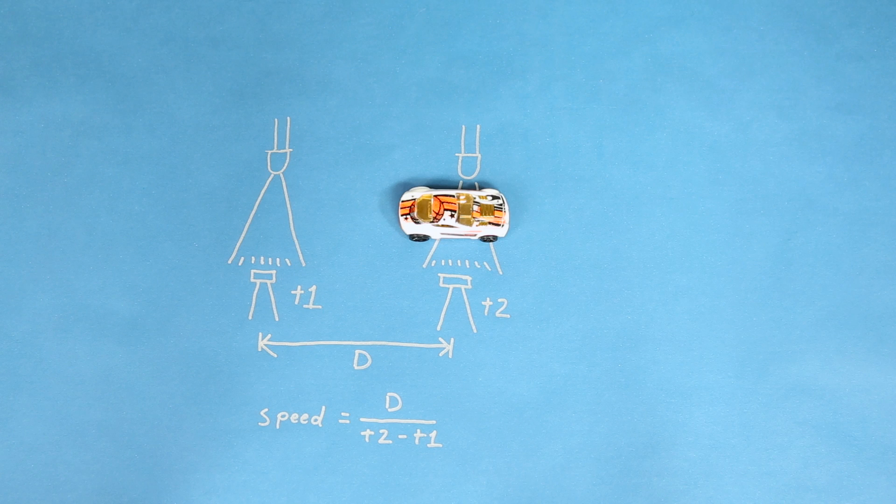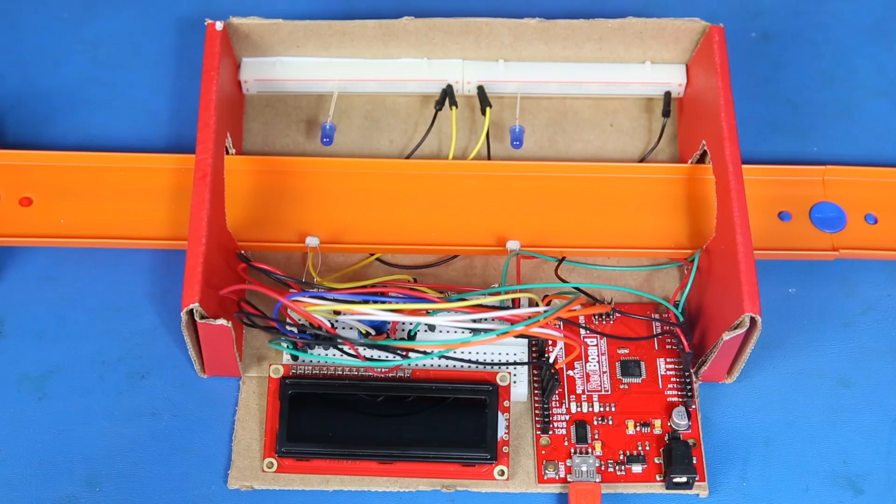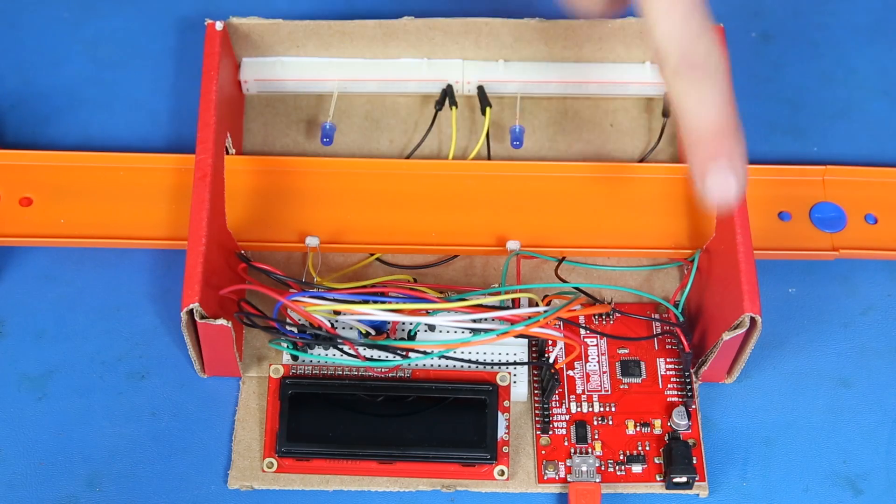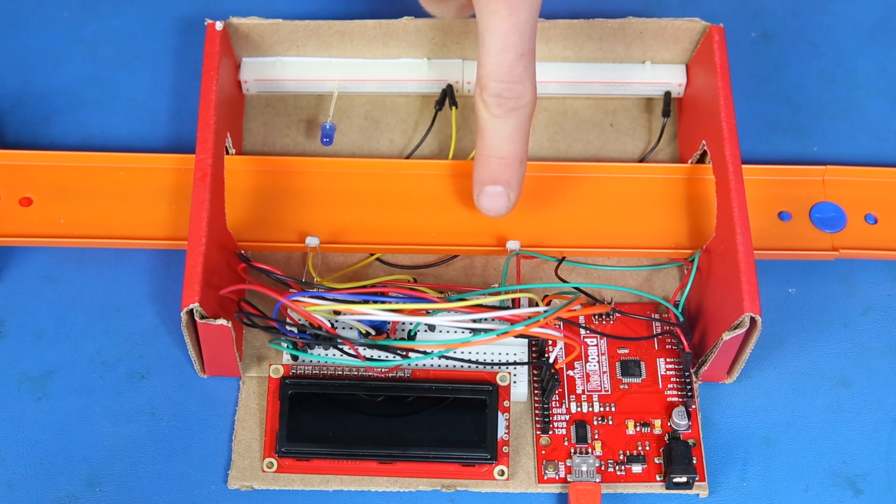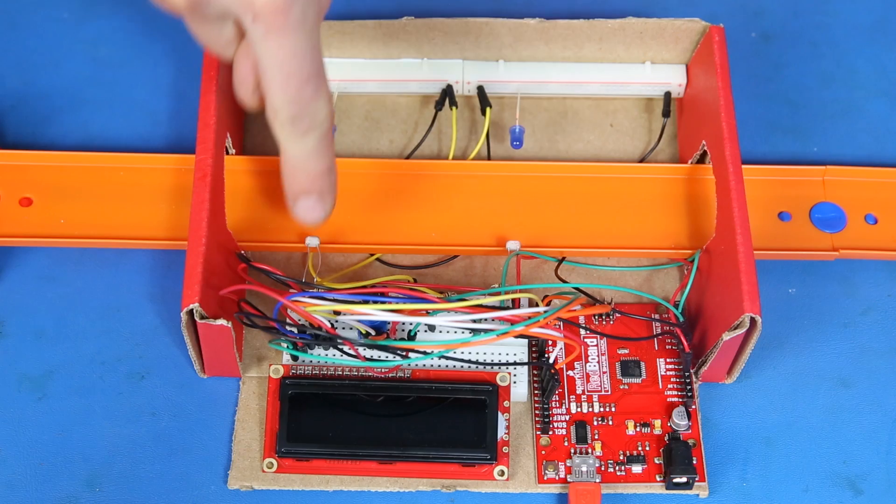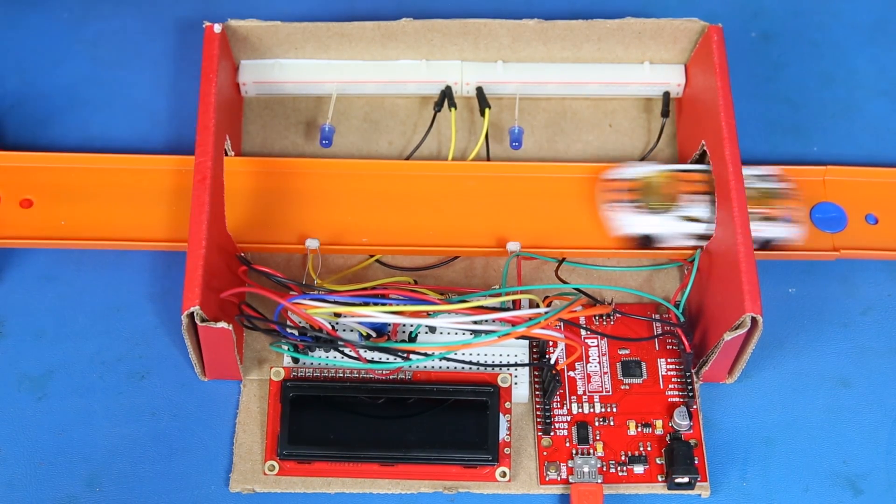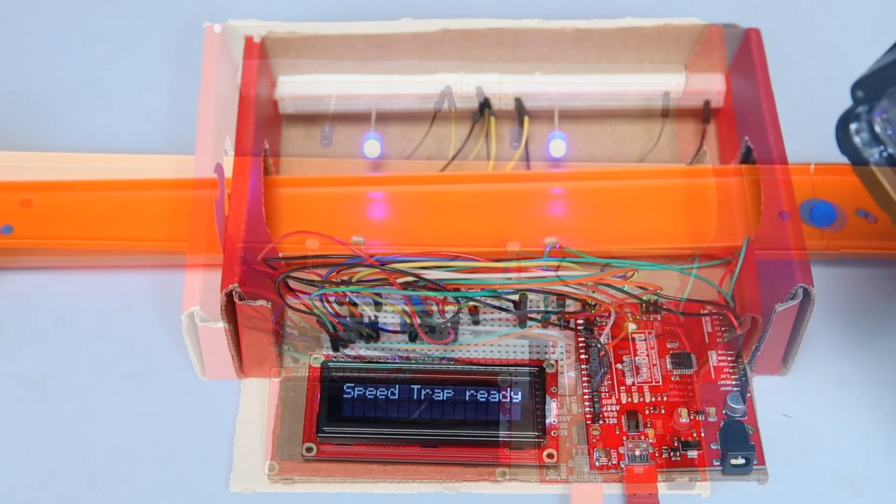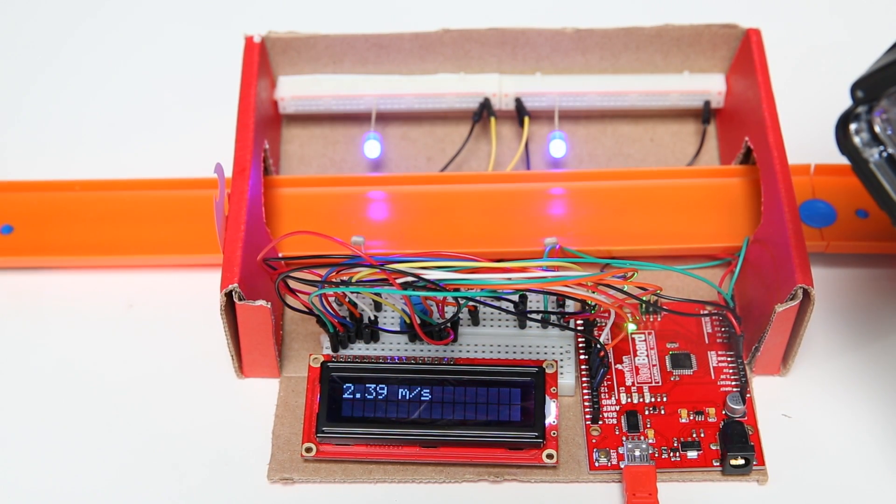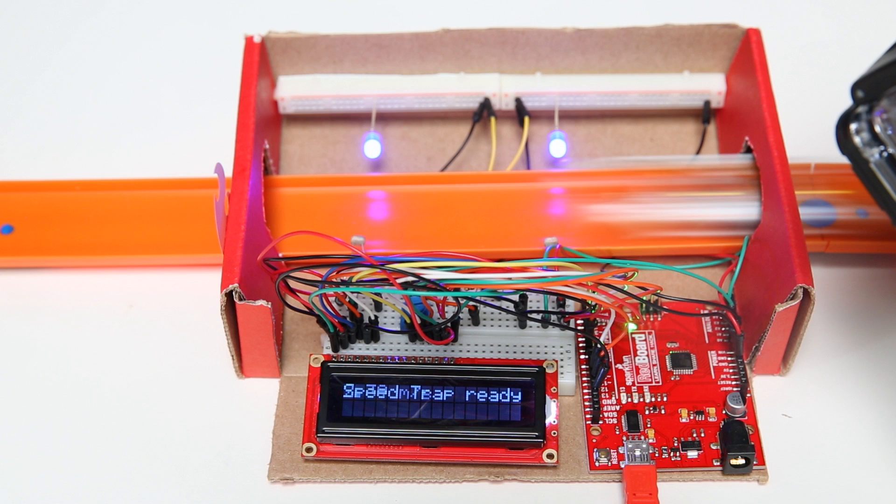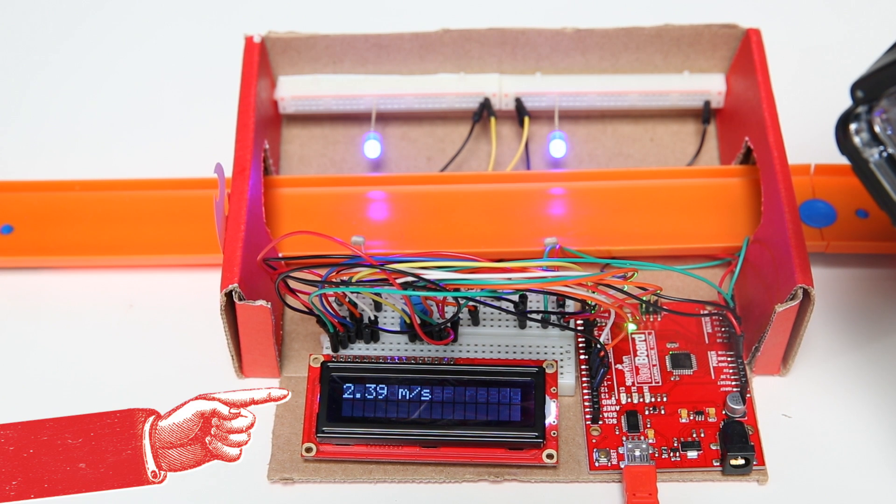All of these measurements and calculations can be handled by our Arduino. To make this project, we'll use parts from the SparkFun Inventor's Kit, an extra photocell, a cardboard box, and some Hot Wheels track. The LEDs shine beams of light perpendicular to the track so that the photocells sense a decrease in light when a car passes by. The Arduino records the time between the beams being broken and calculates the car's speed. It then displays the speed in meters per second on the LCD. Let's try it.